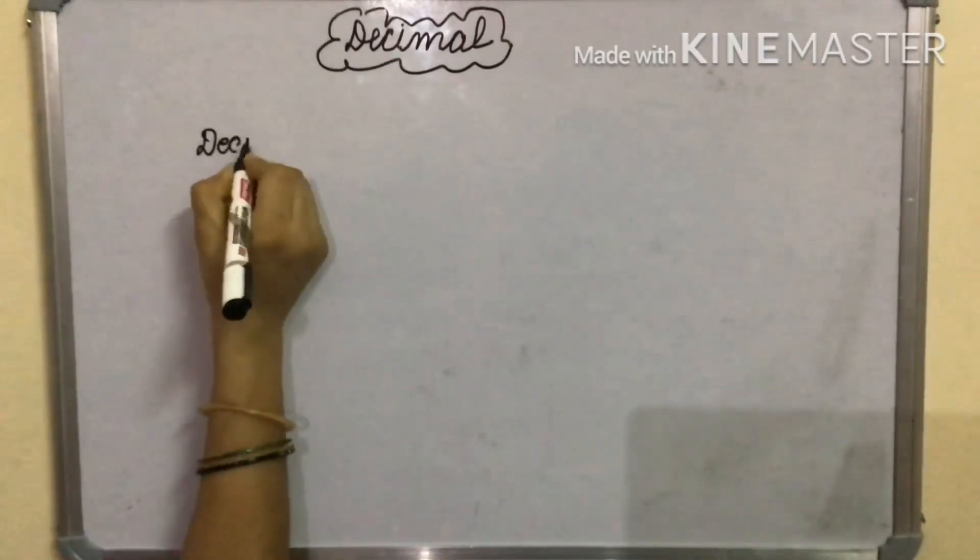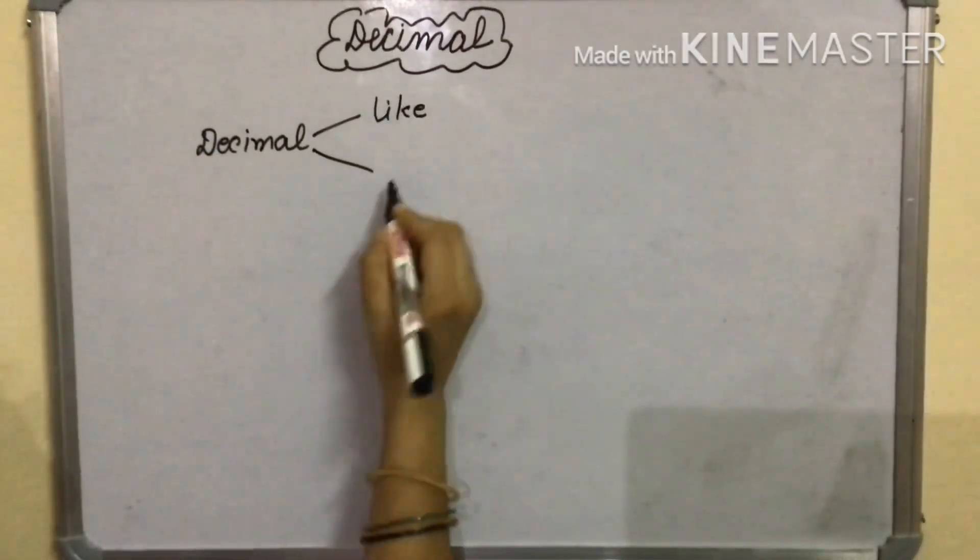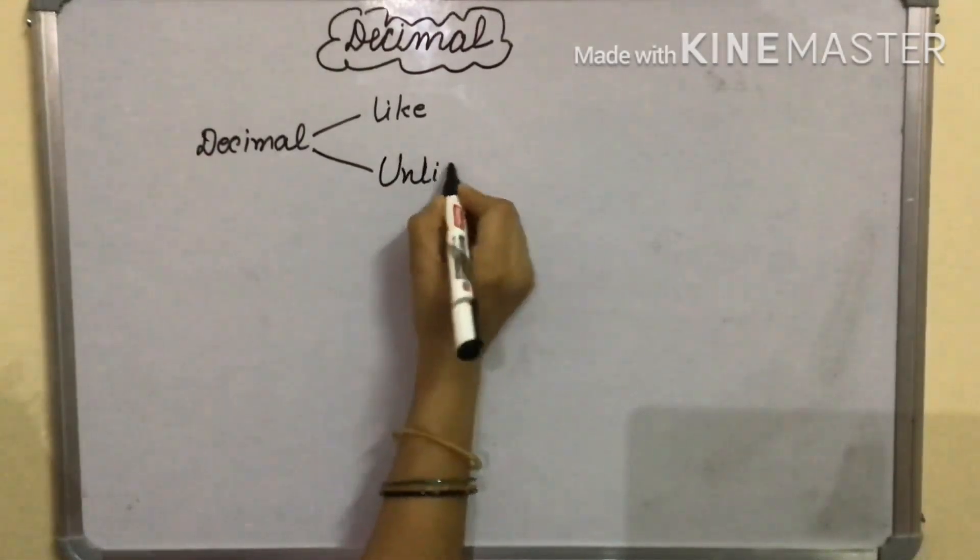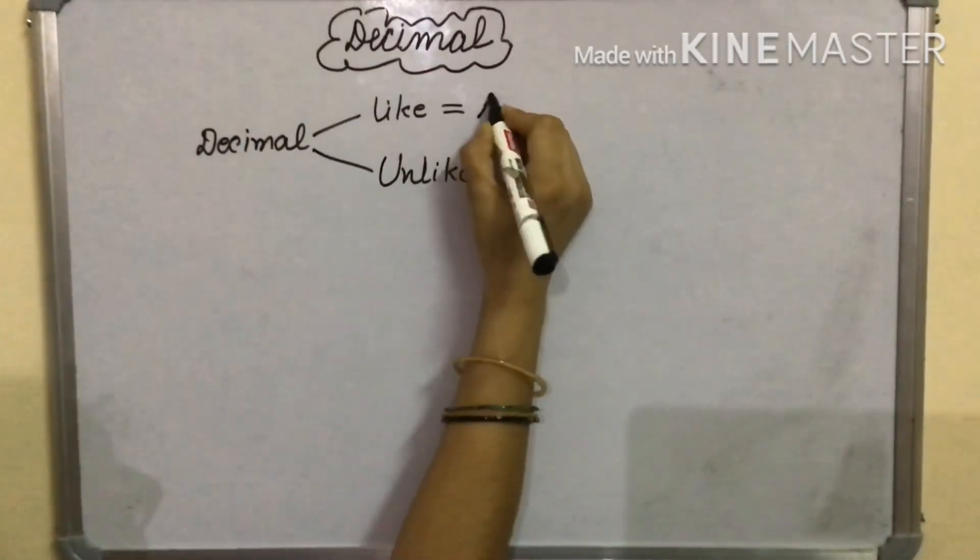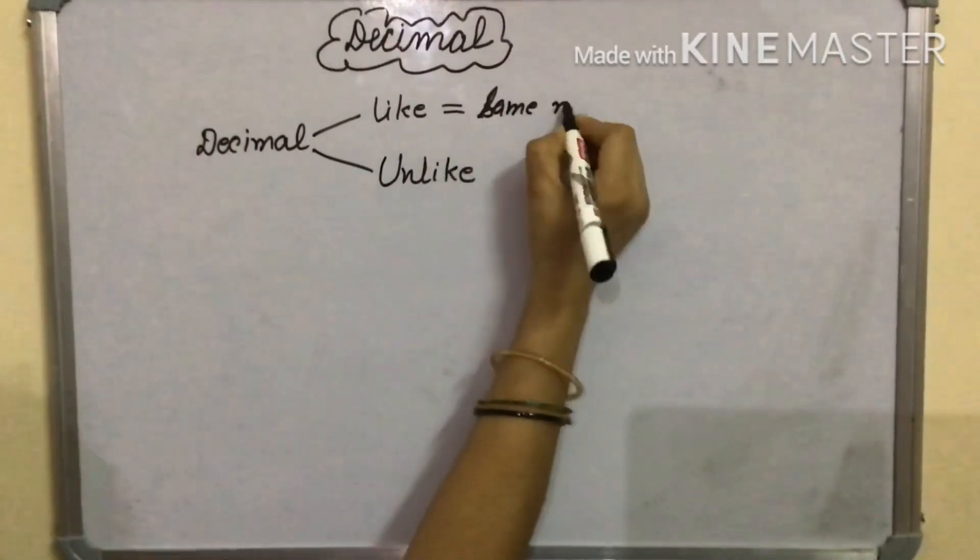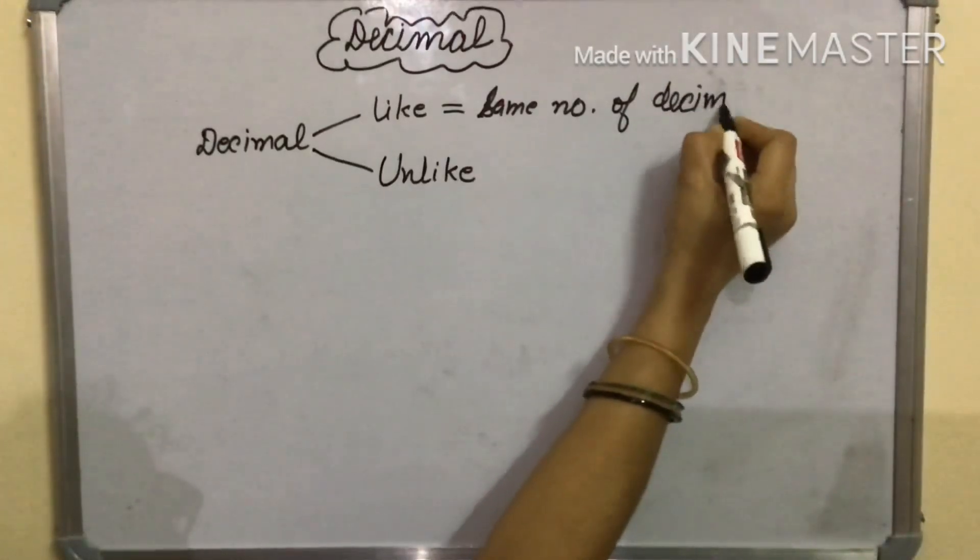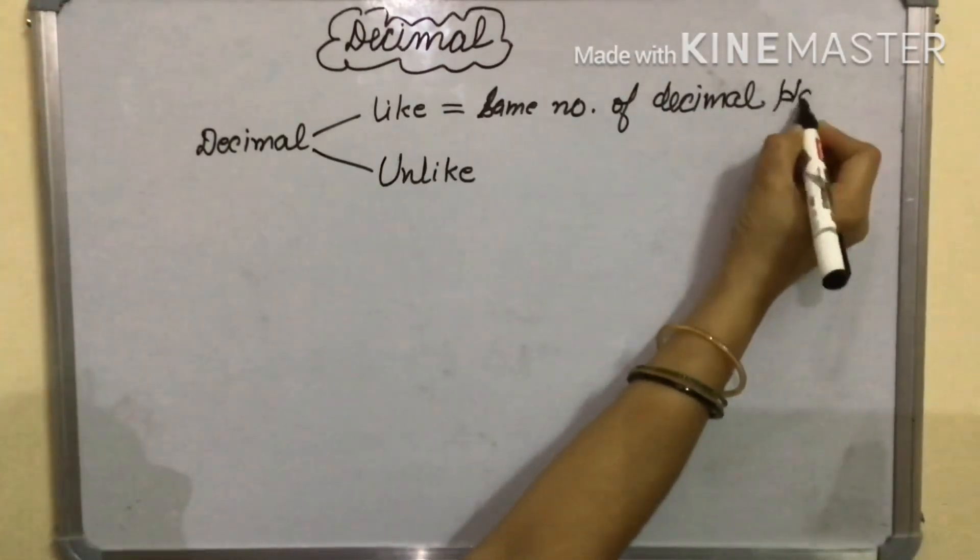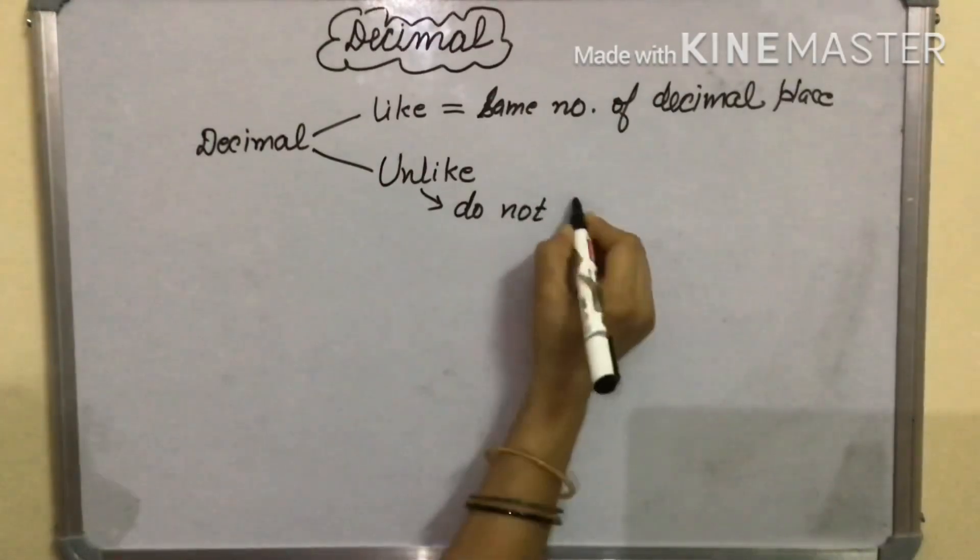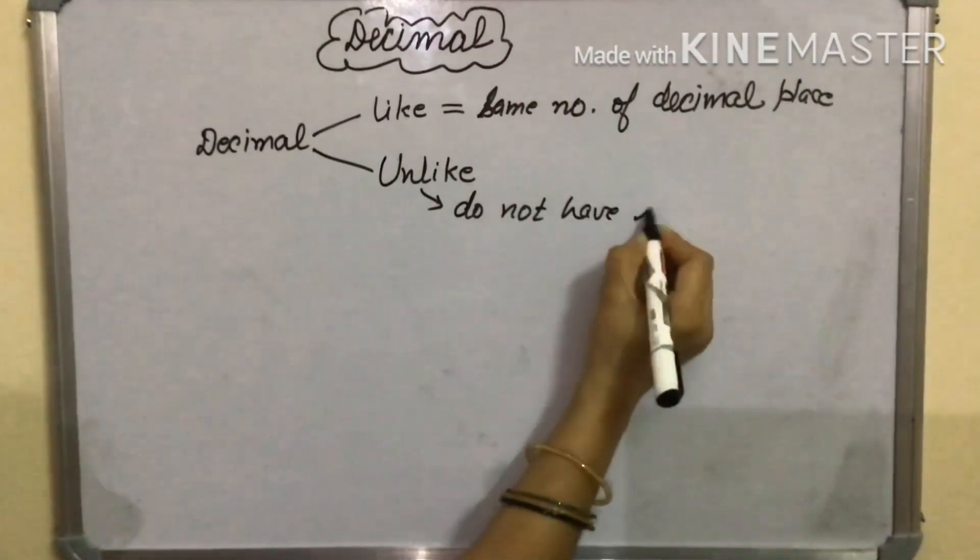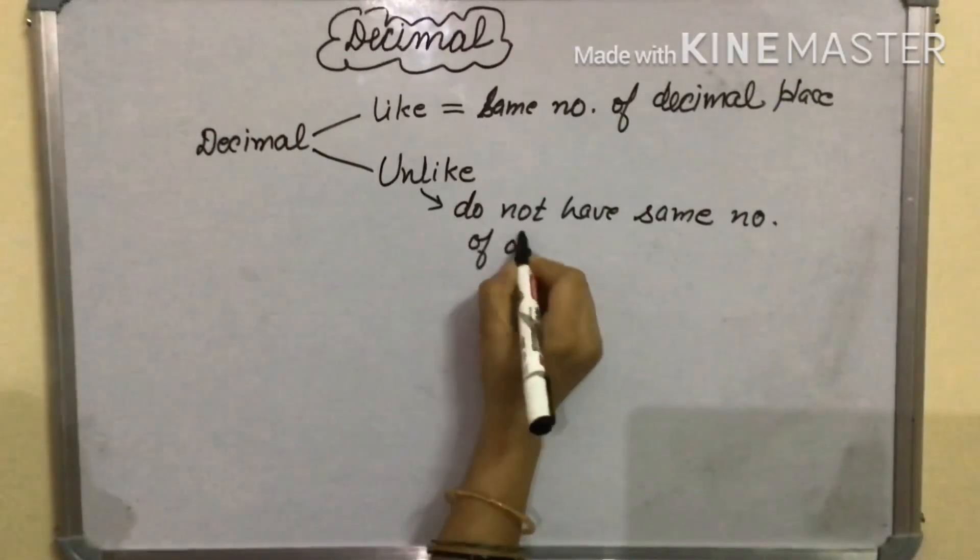Decimal numbers are of two types. First is like decimal and second is unlike decimal. Like decimal have same number of decimal places. And unlike decimal do not have same number of decimal places.